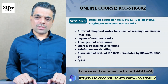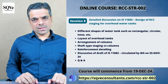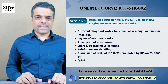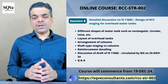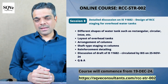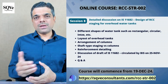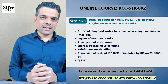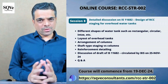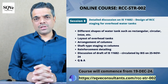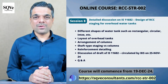In the next session we will discuss IS 11682, which covers the design of RCC staging for overhead water tanks. Topics include different shapes of water tanks such as rectangular, circular, and Intze types; layout of water tanks; arrangement of columns; shaft-type staging versus column staging; and reinforcement detailing. We will also discuss the draft document published by the BIS technical committee on 25 November 2024, comparing it with the present document and highlighting important differences.